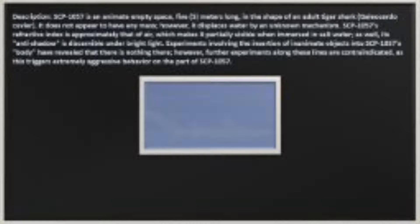Description: SCP-1057 is an animate empty space, 5 meters long, in the shape of an adult tiger shark, Galeocerdo cuvier. It does not appear to have any mass; however, it displaces water by an unknown mechanism. SCP-1057's refractive index is approximately that of air, which makes it partially visible when immersed in salt water.